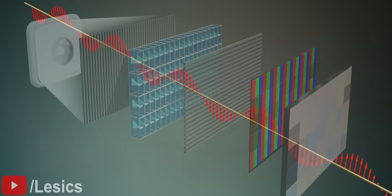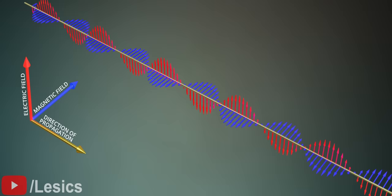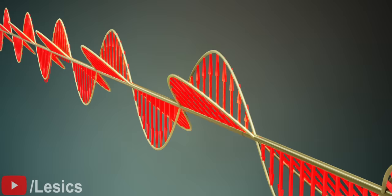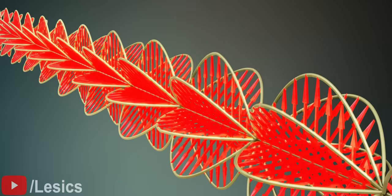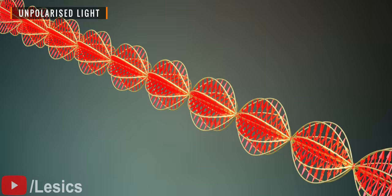The light has both electric and magnetic fields perpendicular to each other, and they are perpendicular to the direction that light travels. However, the electric field and magnetic fields are present in all directions. Here we are showing only the electric field for simplicity. This kind of light is known as unpolarized light.